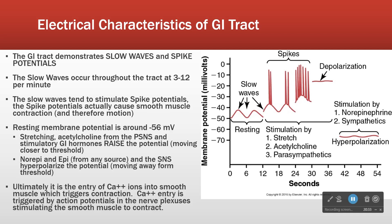Smooth muscle is a little different than skeletal muscle in the sense that smooth muscle doesn't need an action potential every time to contract. Instead, nerves stimulate or inhibit smooth muscle. If we use our meters and look at the electrical activity of the GI tract, what we find is that all the time there are these slow increases and decreases of membrane potential. But the amplitudes are not large enough to cause significant muscle contraction — we're not reaching threshold. Slow waves happen 3 to 12 times per minute.